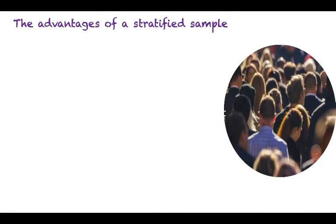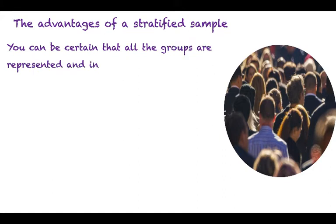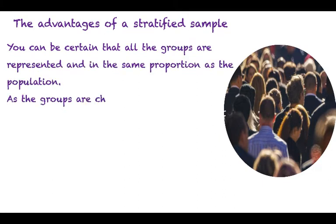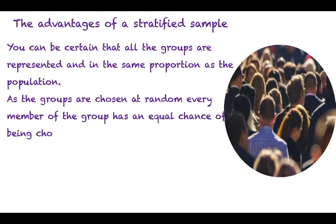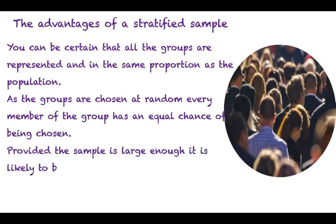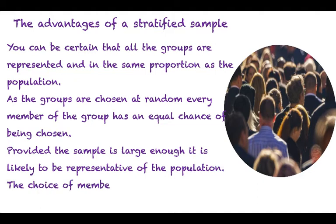The advantages of a stratified sample over a random sample are: You can be certain that all the groups are represented in the same proportion as the population. As the groups are chosen at random, every member of the group has an equal chance of being chosen. Provided the sample is large enough, it is likely to be representative of the population. And the choice of members of groups is unbiased.